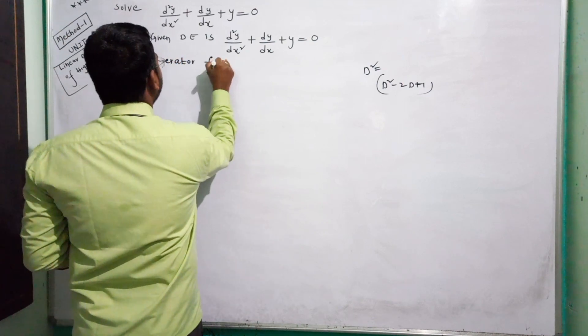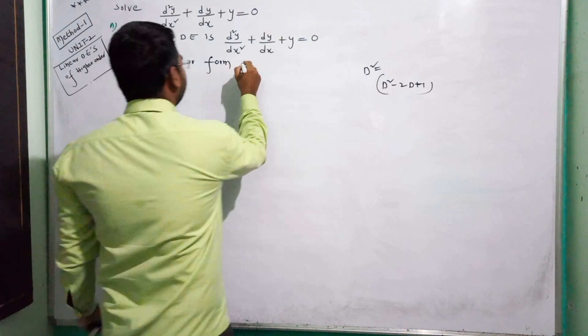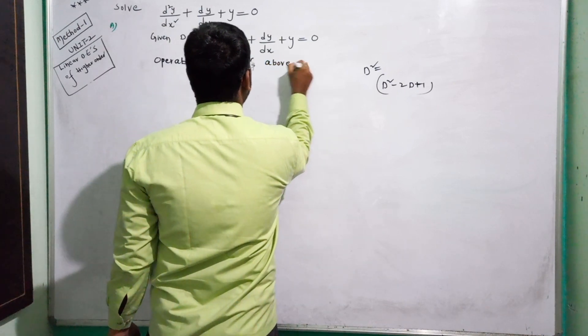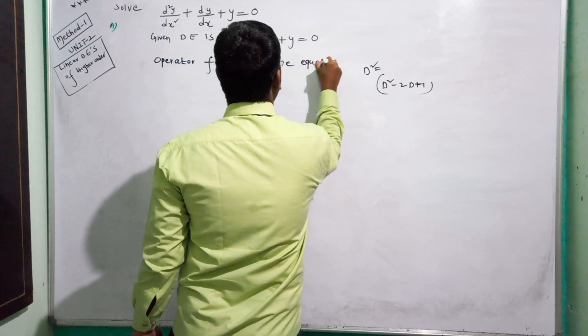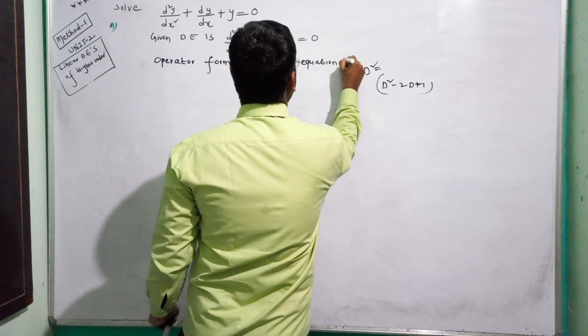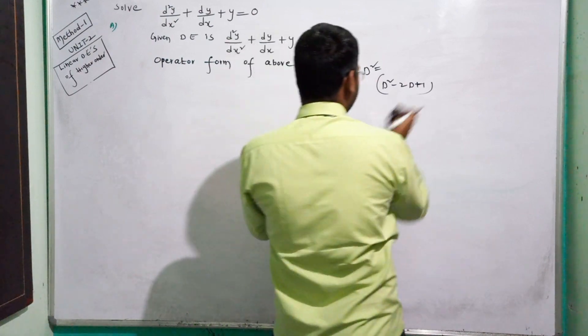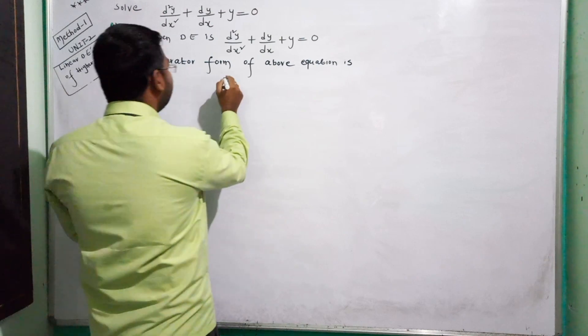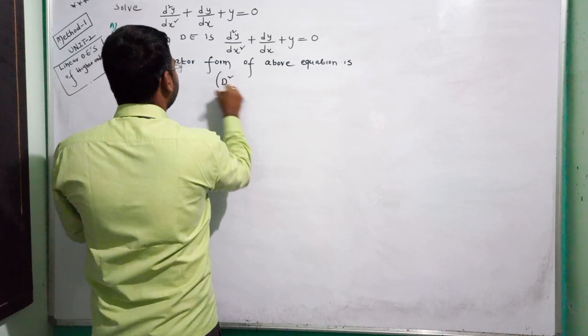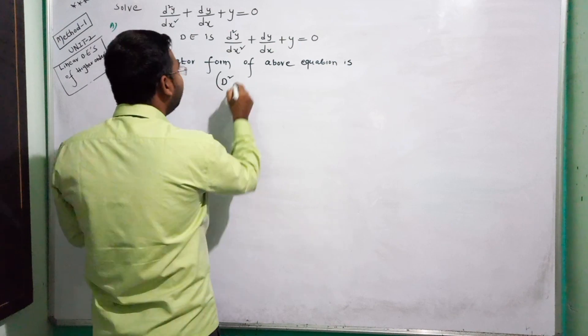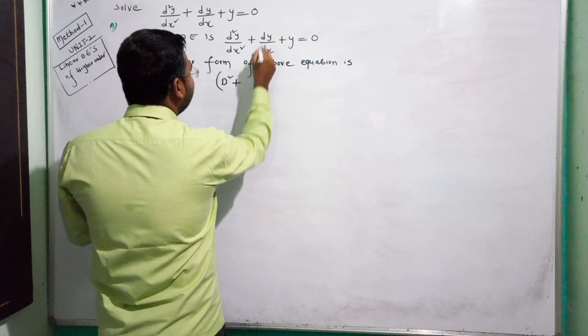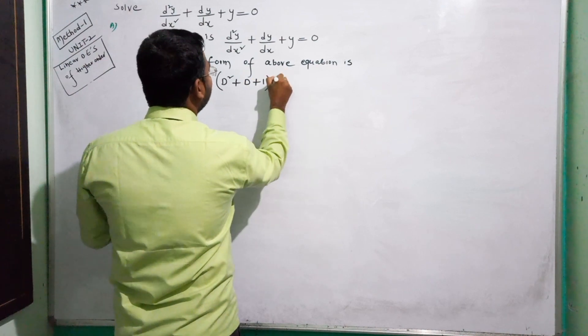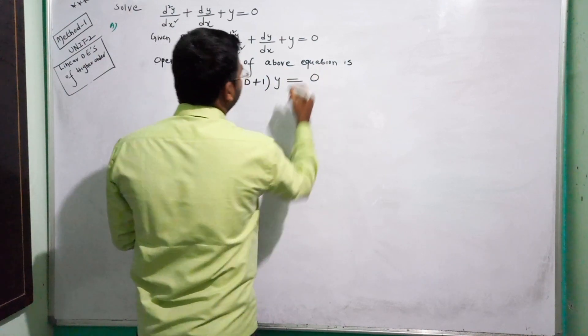Operator form of above equation is: capital D squared Y plus D Y plus Y equals zero. We can take Y common, so (D squared plus D plus 1) times Y equals zero.